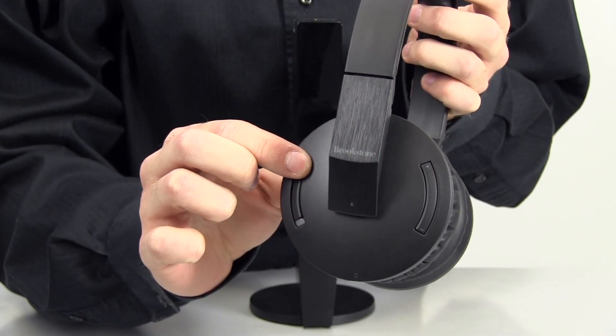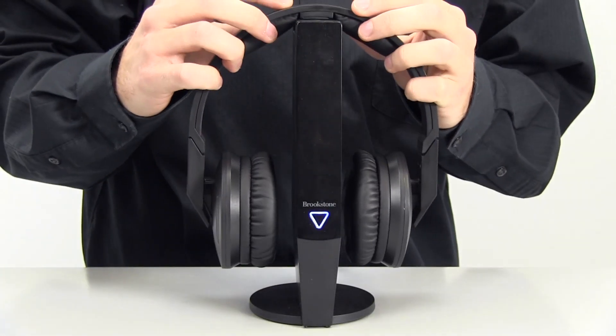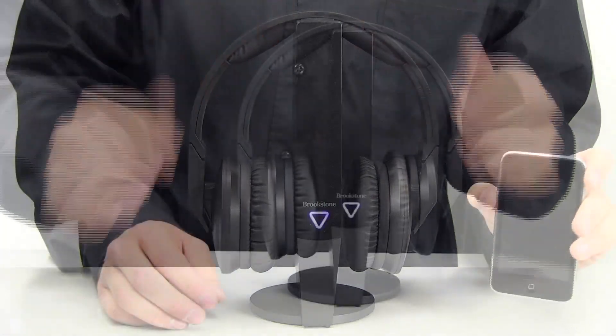When you're done using the headphones, you can turn them off by pressing the power button until the power LED is off.